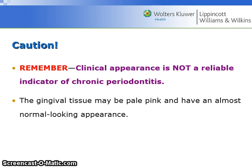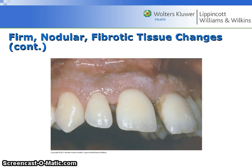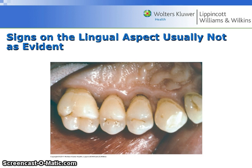Do not tell the patient that their gums are healthy by appearance alone. The gingival tissue may be pale pink and have an almost normal looking appearance and still have chronic periodontitis. You must use a probe and x-rays. This is figure 15.8 on page 260, an example of firm nodular fibrotic tissue changes in chronic periodontitis. This is an image of the palatal gingiva; note the calculus deposits on the tooth surface and the rolled gingival margins. Clinical signs on the lingual aspect usually are not as evident as those seen on the facial aspect.